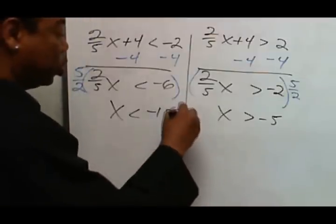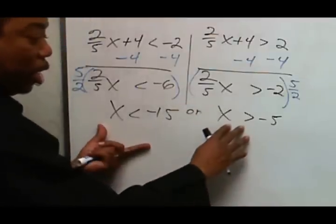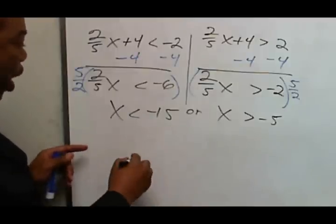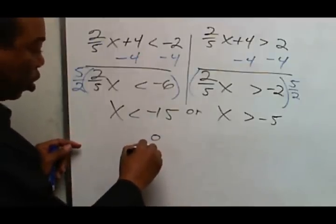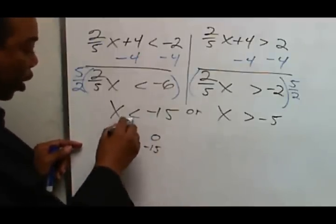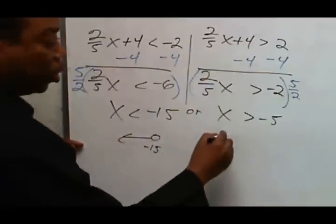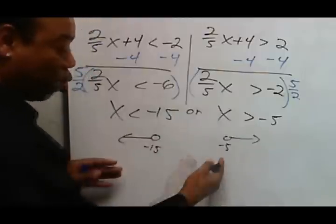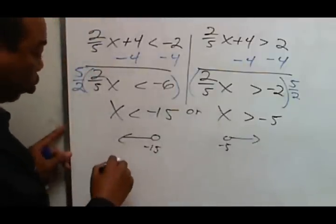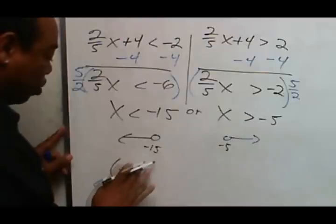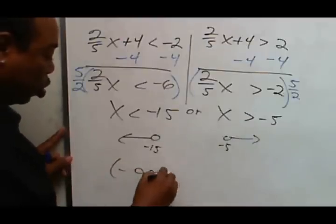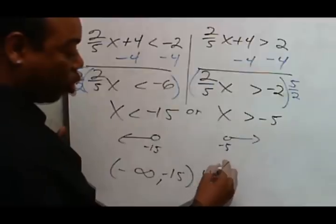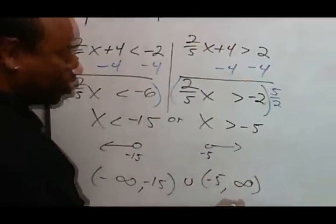So this is the solution in set notation. As a graph, this will be an open circle at negative 15 with less than going to the left, and an open circle at negative 5 with greater than going to the right. The interval notation will be negative infinity to negative 15, open parenthesis, union with open parenthesis negative 5 to positive infinity.